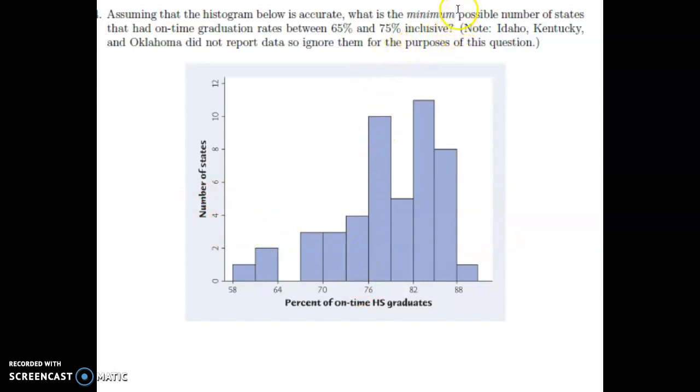Since we don't know where these four states actually fall in here, we have to go up and see what the question is asking. It says the minimum possible. Well, the minimum possible would be that all four of those states could be above that 75 line. They could all be crowded here to the right side, and so maybe none of them are in our range. And if that's the case, when we're talking the minimum possible, it would just be these six states. Because, of course, there's no states here, no matter what. So we'd have these six states, and we wouldn't have any there.